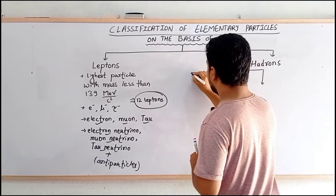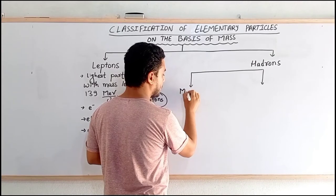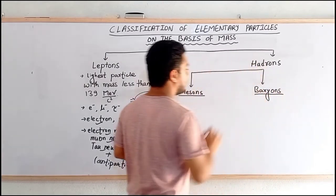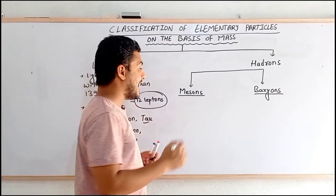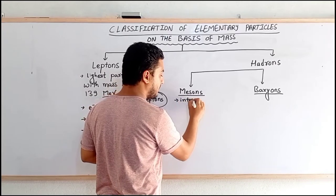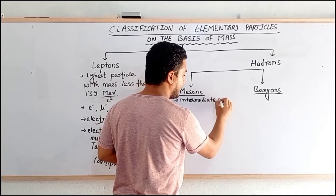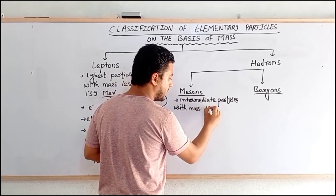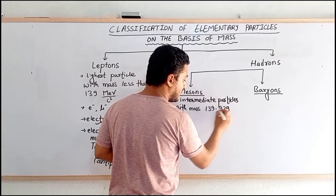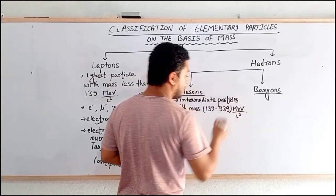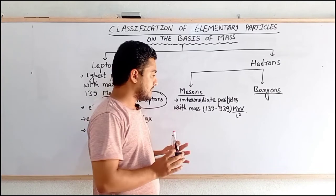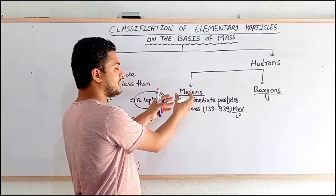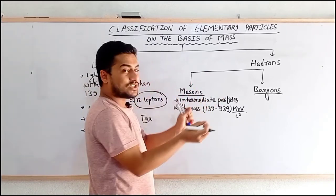Now let's talk about hadrons. Hadrons can be classified into two groups: mesons and baryons. Mesons are intermediate particles with mass between 139 to 939 mega electron volt per c-squared. These are the particles which fall under the category between leptons and baryons, so they are medium-sized particles.